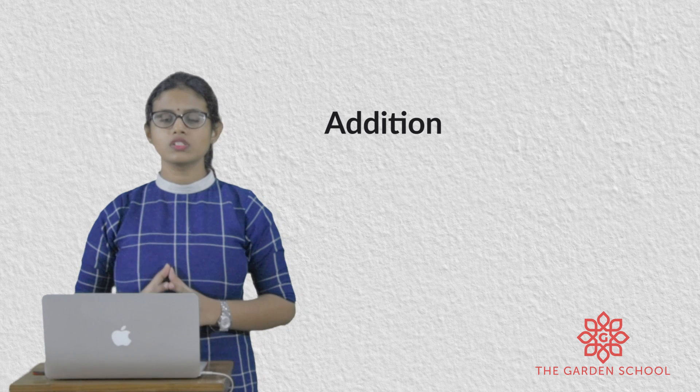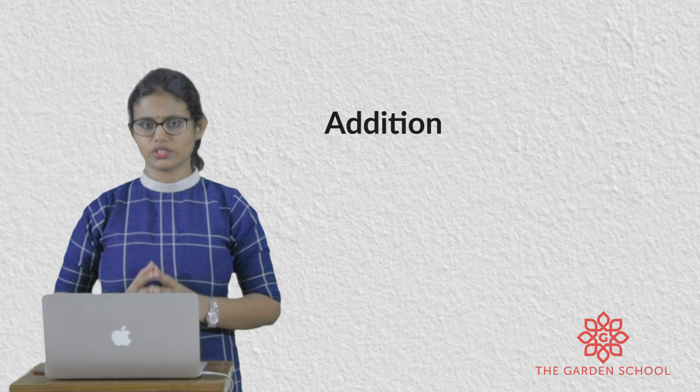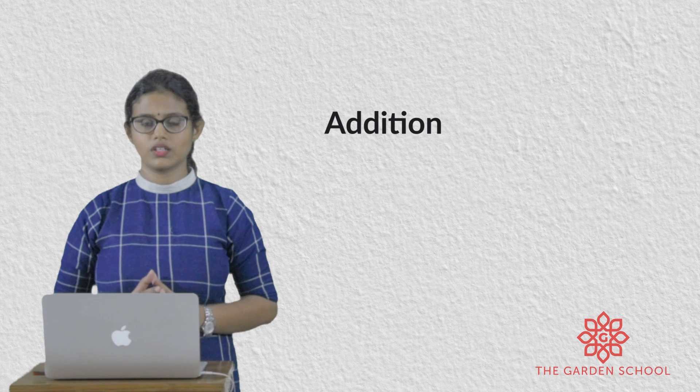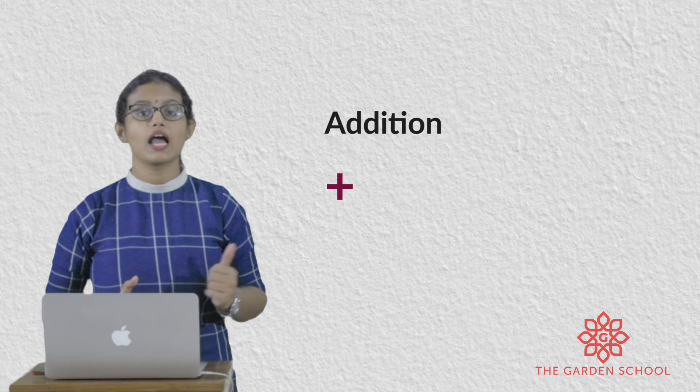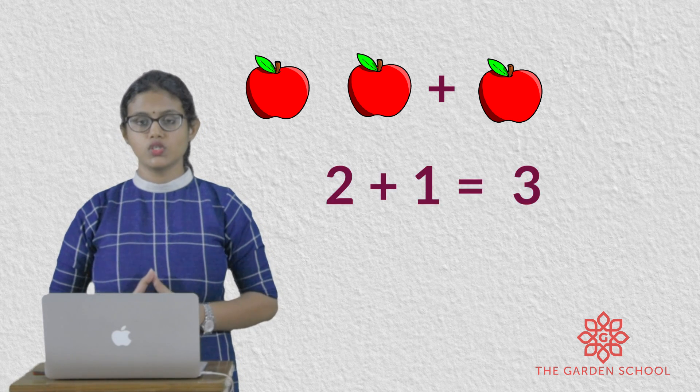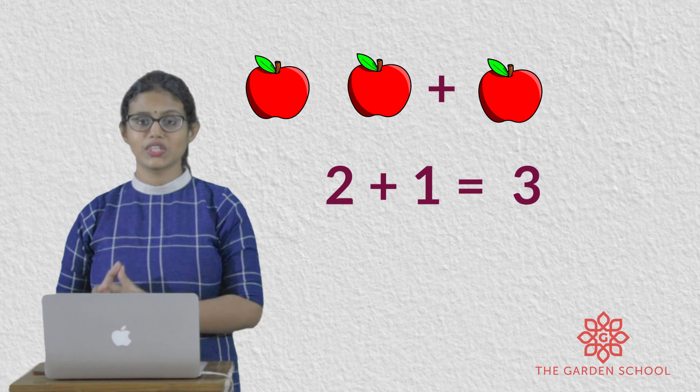Let's see about addition. So what is addition? Adding something. The sign we use in addition is plus. So can you see the first example? In the first group there are two apples, plus you are adding one more apple. So how many apples do you have in total? There are two apples plus one more apple, so two plus one equals three.